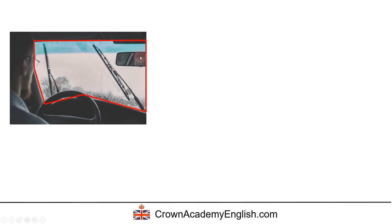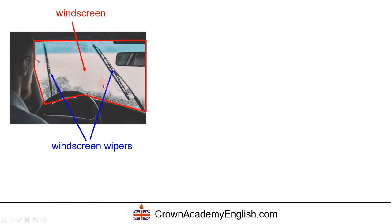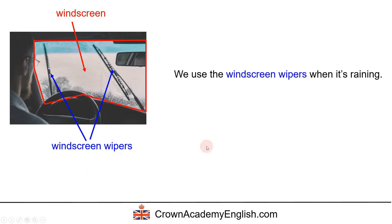So in red, this whole glass window is called the windscreen. And in blue, these objects are called the windscreen wipers. We use the windscreen wipers when it's raining, because they wipe the windscreen.